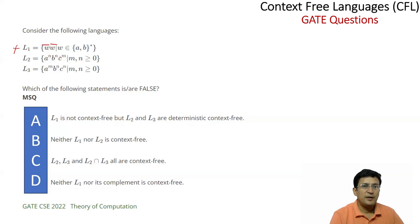L2 is a-power-n, b-power-n, and c-power-n. We are making a comparison between the count of a with the count of b only. So this is a single comparison. There is no restriction on the number of the b's. Hence we will say that this language is context-free.